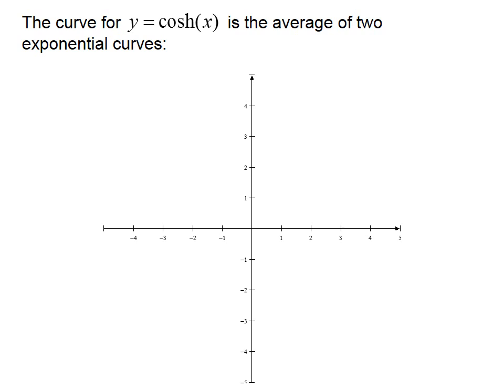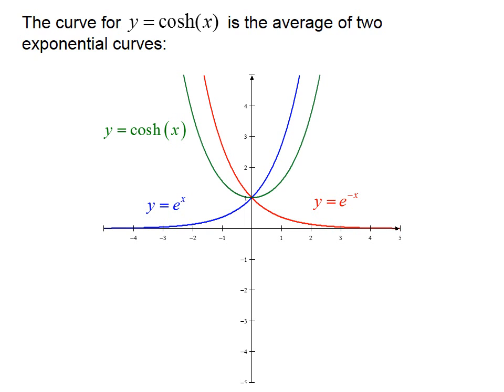The curve for y equals cosh x is the average of two exponential curves: y equals e to the x, and y equals e to the negative x. So here we have y equals cosh x.